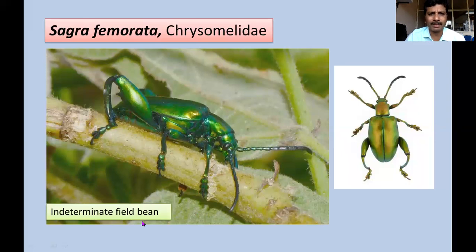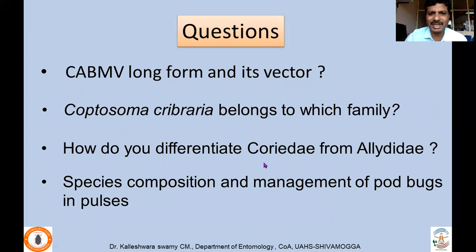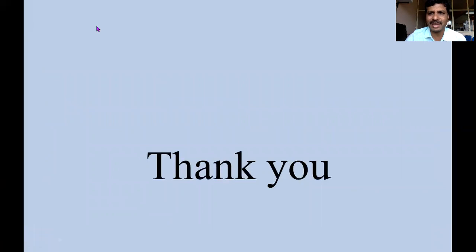To end this lecture, here are a few review questions: What is the long form of CABMV? What is its vector? Which family does Coptosoma cribraria belong to? How do you differentiate Coreidae from Alydidae? Discuss the species composition and management of pod bugs in pulses. Thank you very much — if there are any questions, post them below or email me.